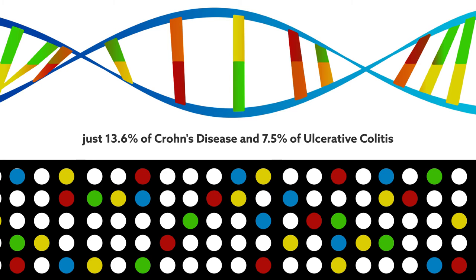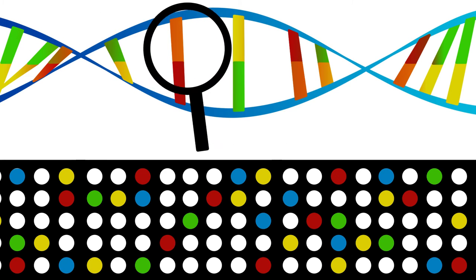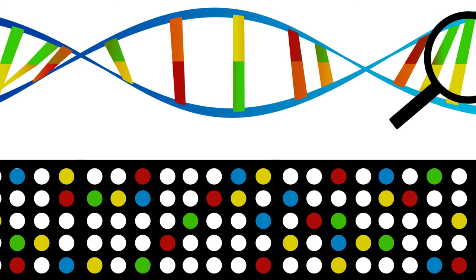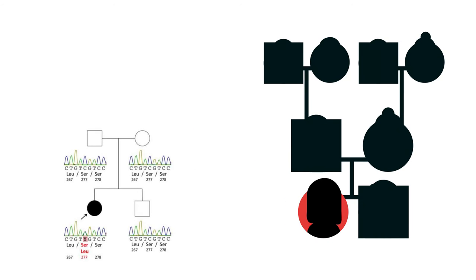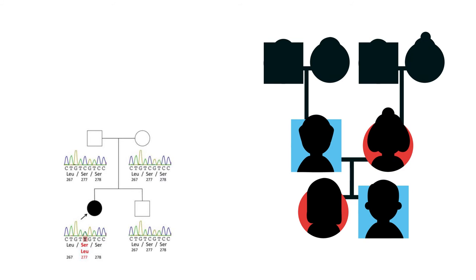To identify mutations that might be less common but more important in driving the condition, the researchers turned to one 16-year-old girl with ulcerative colitis. She had no family history of IBD, so the team sequenced her exome, or all of her genes coding for proteins, along with those of her parents and brother, looking for critical differences.